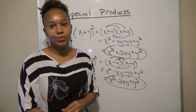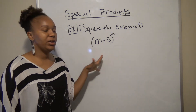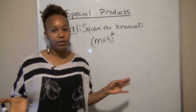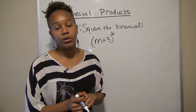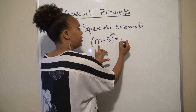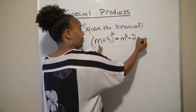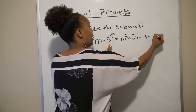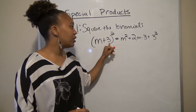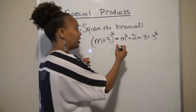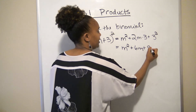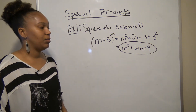Let's do some examples. For example one, we want to square the binomial (n + 3). Using the shortcut: the first term squared is n², two times the first term times the second term is 2 × n × 3 = 6n, and the last term squared is 3² = 9. So (n + 3)² = n² + 6n + 9.